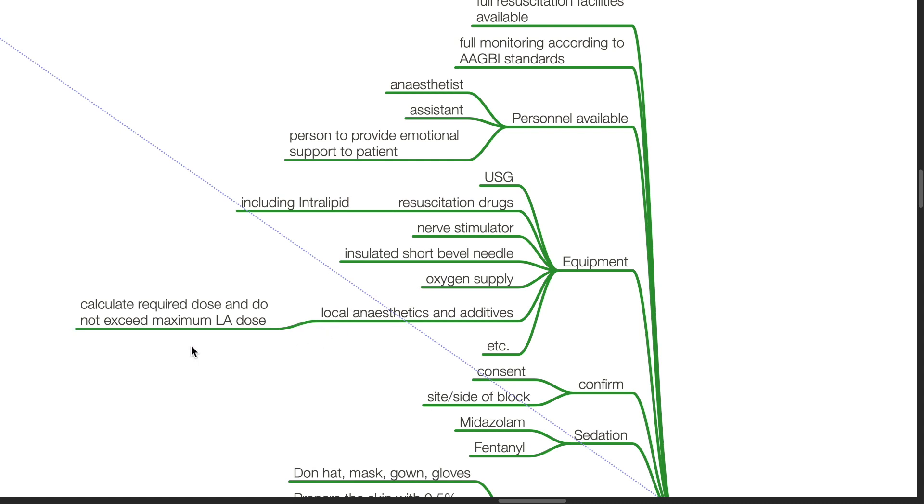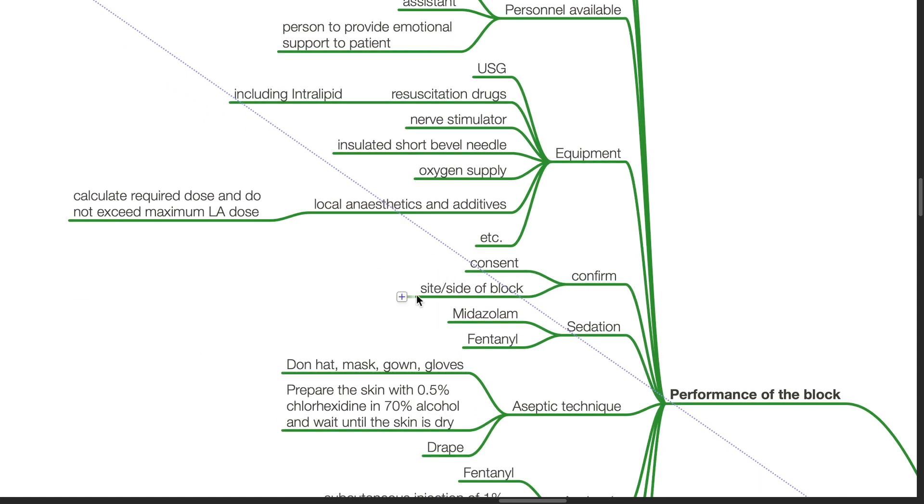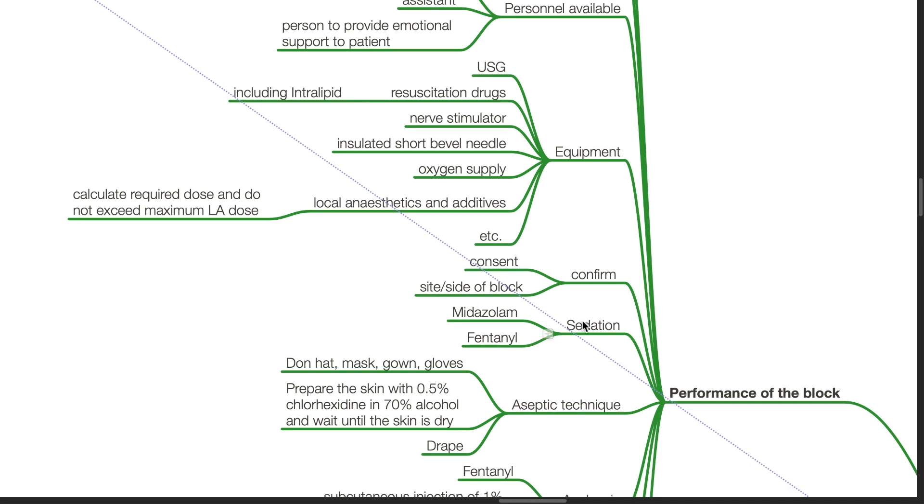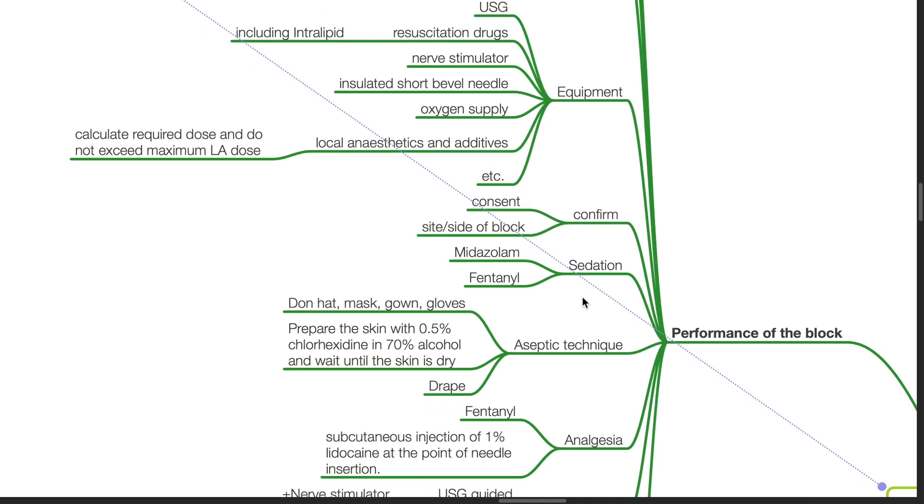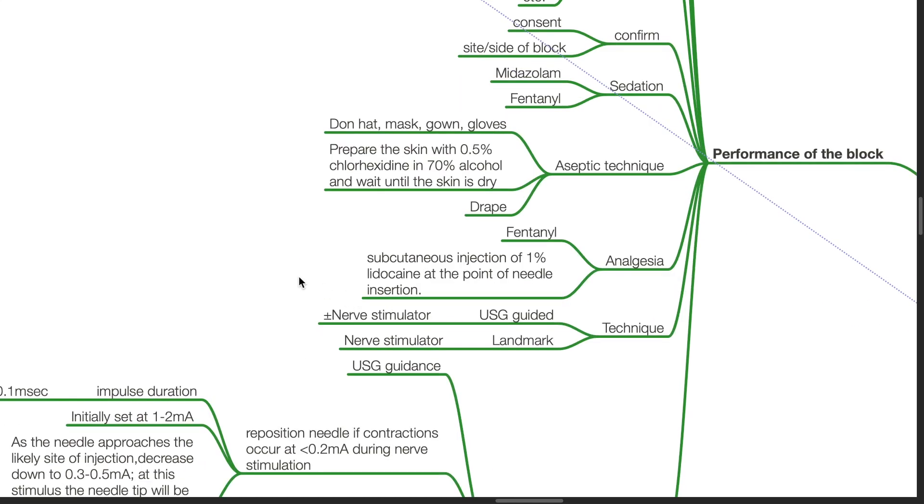Calculate the required dose and do not exceed maximum local anesthetic dose. Confirm consent and site of the block. Sedation with midazolam and fentanyl. Use aseptic technique: don head, mask, gown, and gloves. Prepare the skin with 0.5% chlorhexidine in 70% alcohol and wait until the skin is dry and drape. Analgesia includes fentanyl and subcutaneous injection of 1% lidocaine at the point of needle insertion.